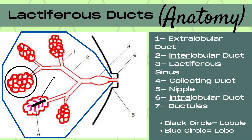Milk production begins in the acinar cells, which are the little red circles on the breast lobule diagram. The breast lobule is the black circle on this diagram. Those acinar cells make the milk, which then travels to the ductule, next to the intralobular duct — intra meaning within that lobule — then outside that lobule to the extralobular duct, which connects to the interlobular duct, which transports the milk between the lobules and connects to the lactiferous sinus or ampulla, and all of that ends in the collecting duct at the nipple.